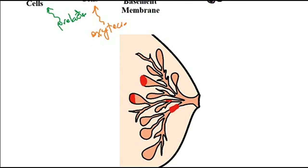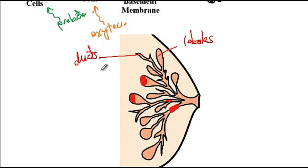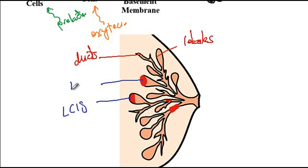Ducts and lobules differ: lobules are essential for milk production. In lobular carcinoma in situ, invasive cells are confined inside the lobule but have not yet invaded the basement membrane. In invasive lobular carcinoma, invasive cells inside the lobule have already invaded the basement membrane.